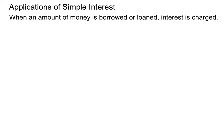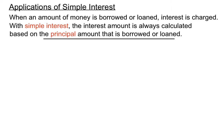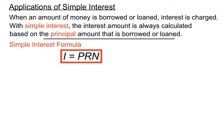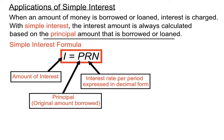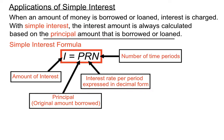Let's run through simple interest. When an amount of money is borrowed or loaned, interest is charged — it's the cost of borrowing money and using it. With simple interest, the interest amount is always calculated based on the original principal amount borrowed. The simple interest formula is I equals PRN, where I is the interest earned or paid, P is the principal, R is the interest rate per period (expressed as a decimal), and N is the number of time periods — months or years depending on the question.